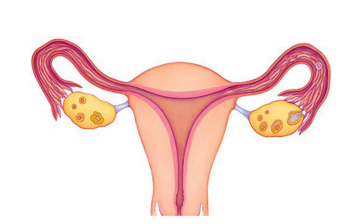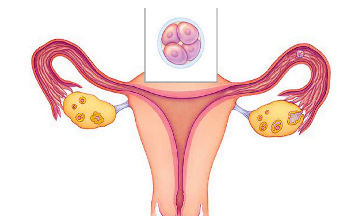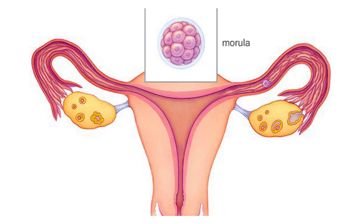Fertilization typically takes place in the upper part of the oviduct. Cleavage begins as the zygote moves through the oviduct toward the uterus. Continued mitotic divisions produce a ball of 16 to 32 cells called a morula.